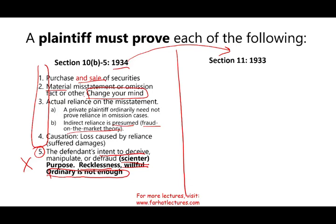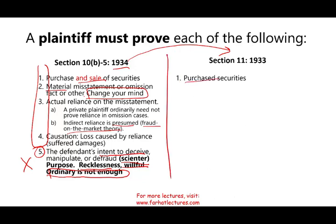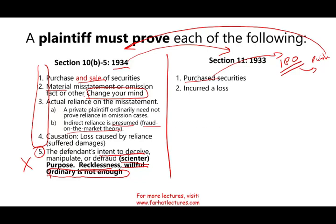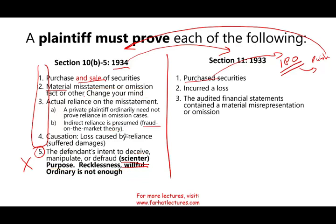Under Section 11 of the 1933 Act, what would the plaintiff have to prove? First, you have to show that you purchased the shares — only purchased, not sold, because Section 11 deals with IPOs. Once you sell, you're dealing with the secondary market under 1934. Second, that you incurred a loss — easy: I bought the stock for $10, now it's at $6. Third, that the audited financial statement contained a material misstatement. That's all you have to show under the 1933 Act.